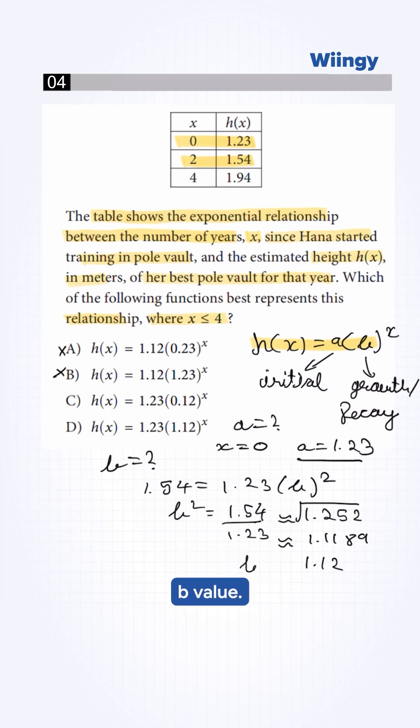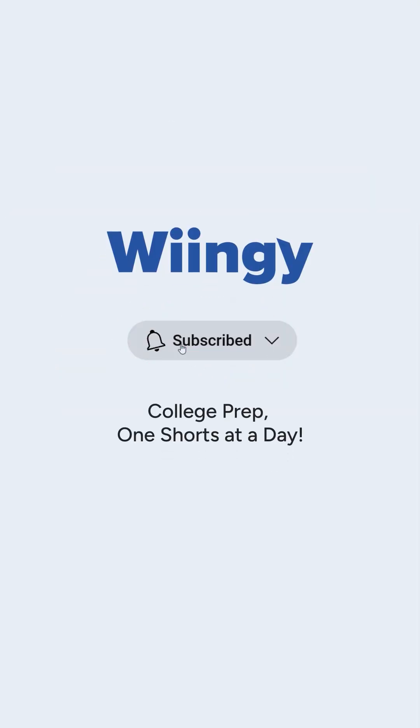So, we got the b value. By this, option d matches our values. So, the correct option will be d. Keep practicing with us. Subscribe for more solutions.